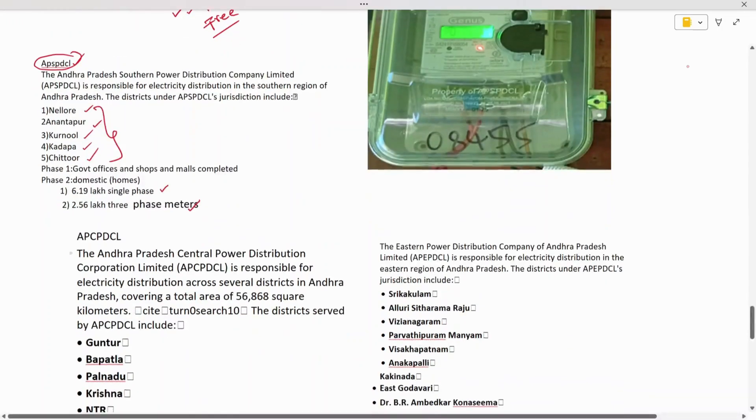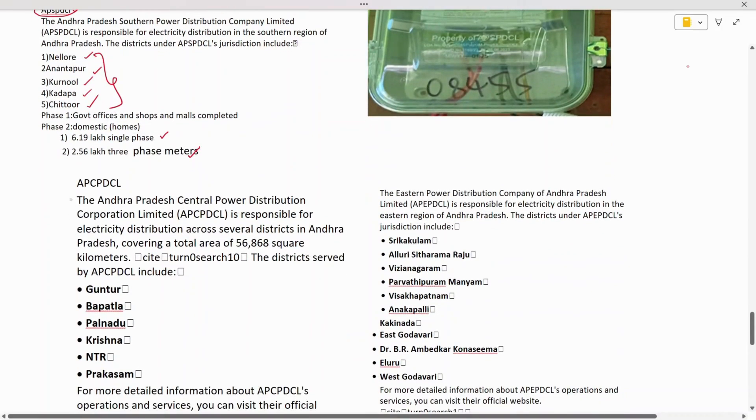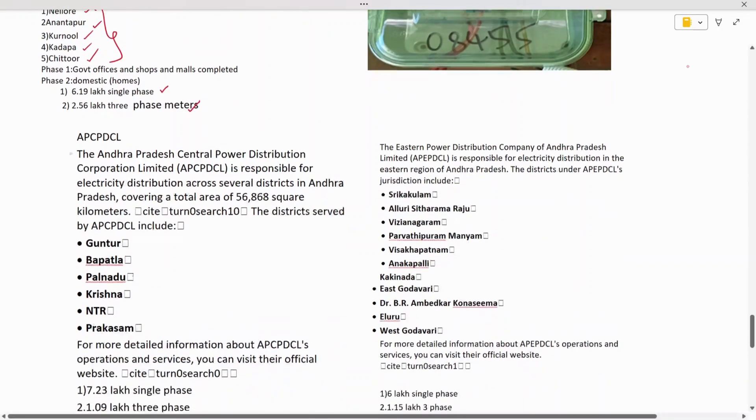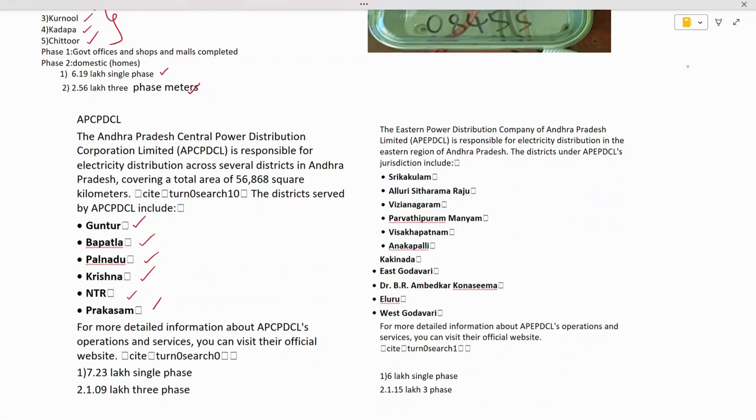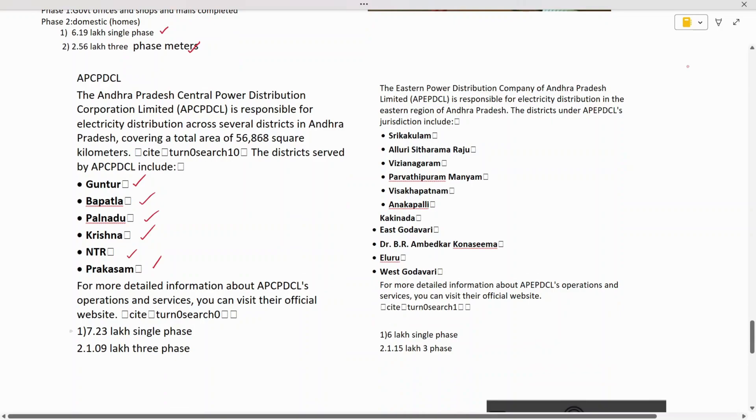The second distribution corporation is Andhra Pradesh Central Power Distribution Corporation Limited, which includes the main capital Guntur, Bapatla, Palnadu, Krishna, NTR, and Prakasam districts. Around 7.23 lakh single-phase smart meters and 1.9 lakh three-phase smart meters are issued and in the process of installation.